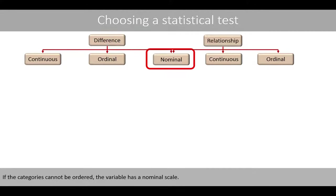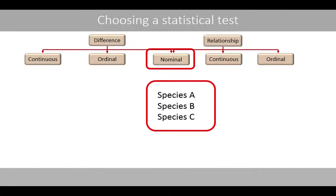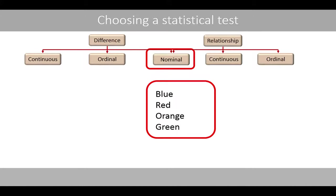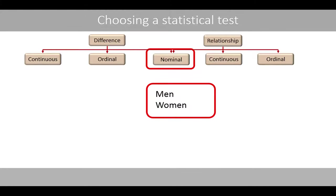If the categories cannot be ordered, the variable has a nominal scale. For example, species A, B, and C are on nominal scale, as well as the colors blue, red, orange, and green. The variable gender is also on nominal scale, where we have the categories men and women.